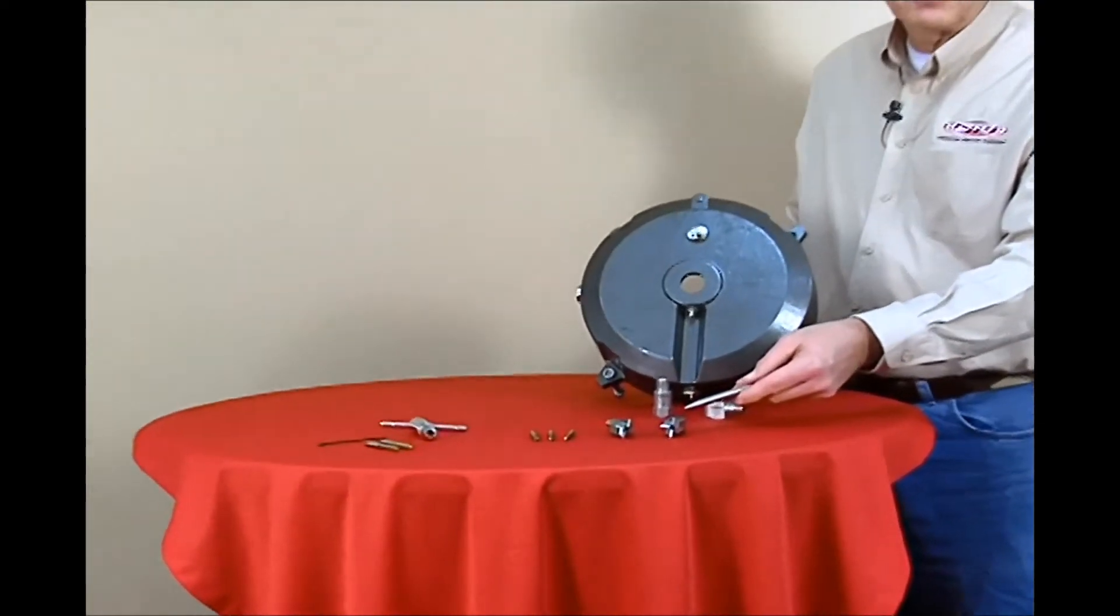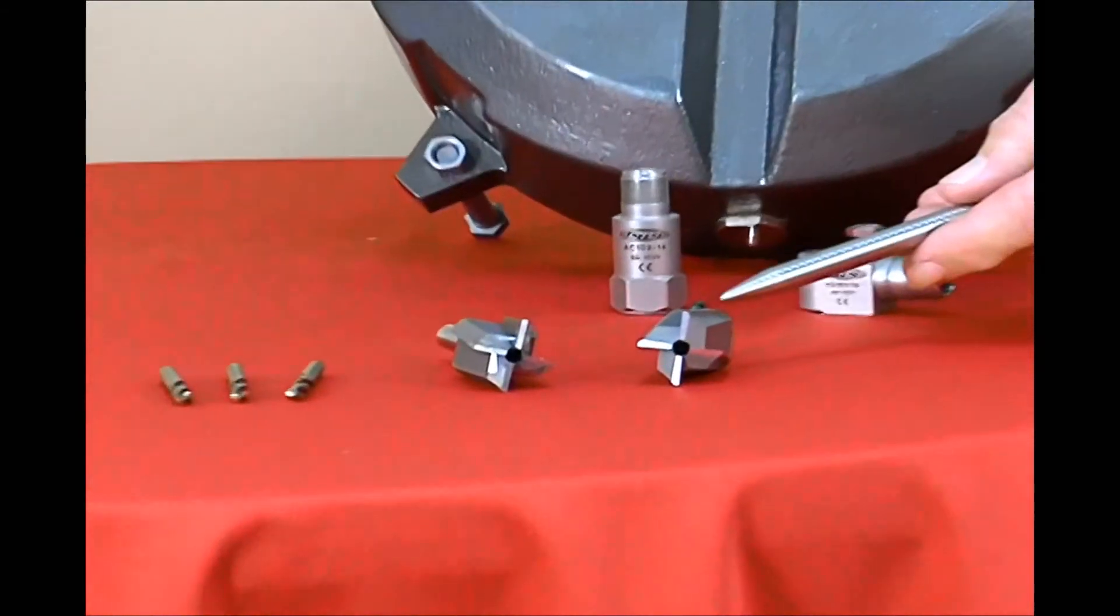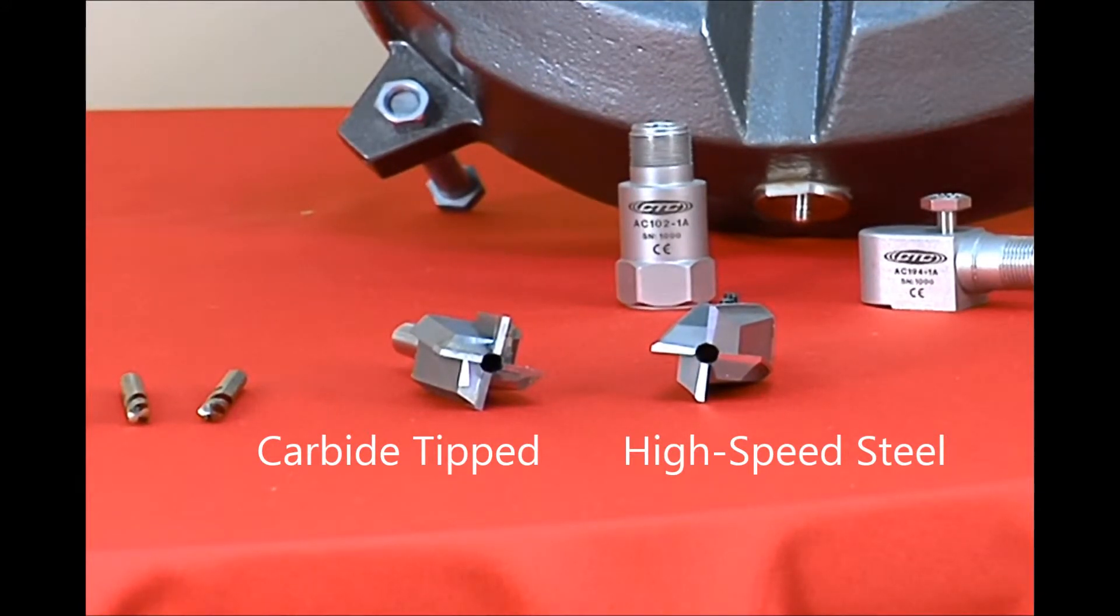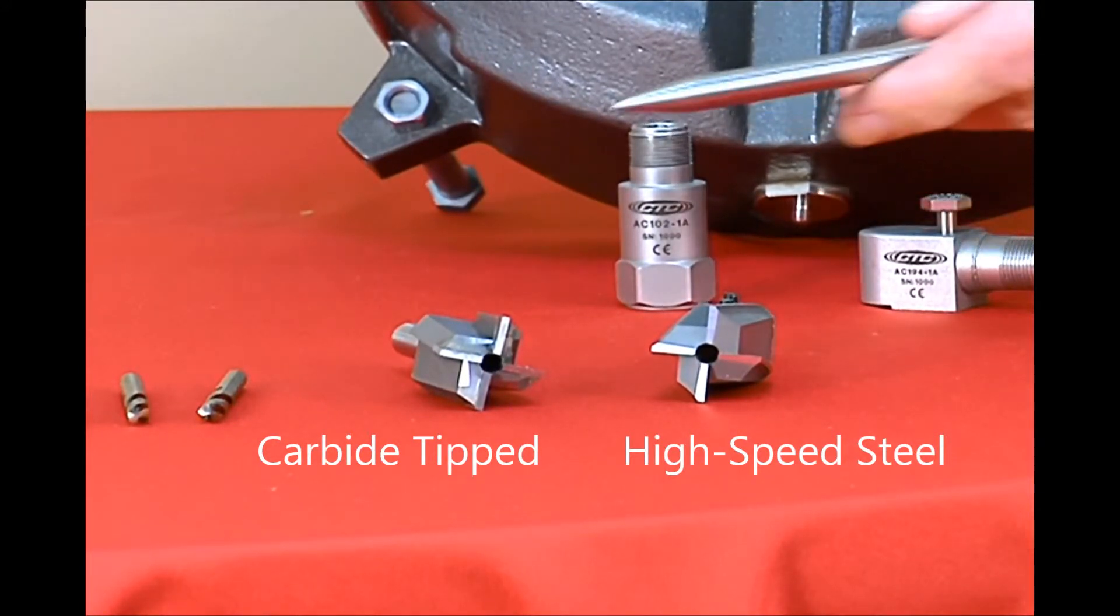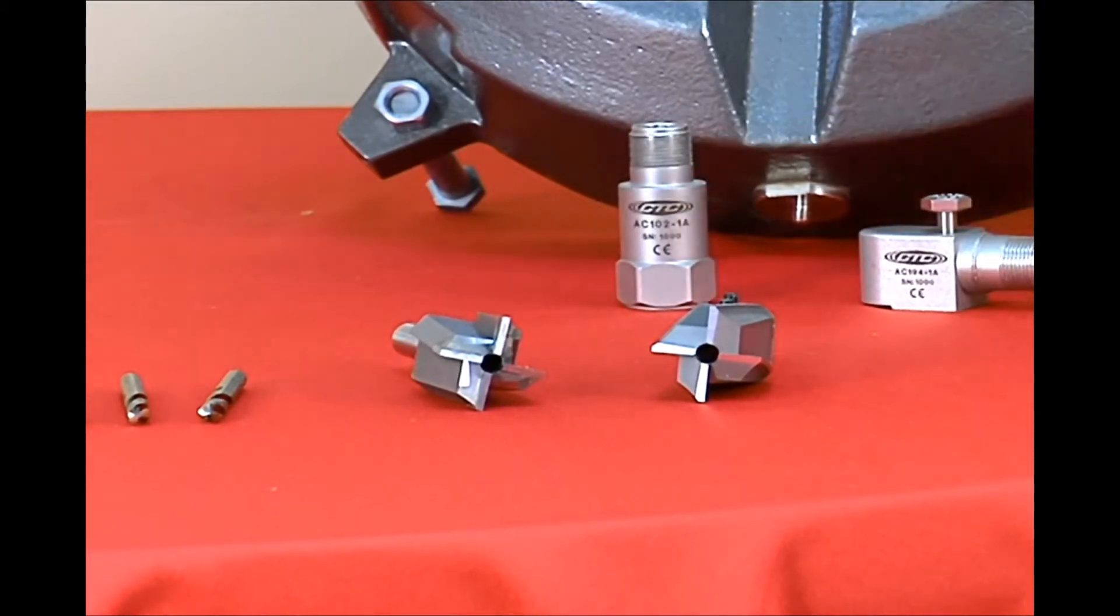We have one tool that's high-speed steel, and we have one tool that's carbide tipped. The high-speed steel tool can be resharpened. You may not get as many spot faces out of it, but it can be resharpened. The carbide tipped tool gets much more spot faces out of it, although it is a little more difficult to resharpen.